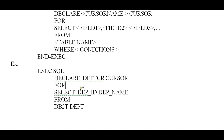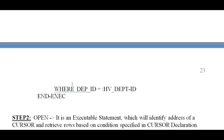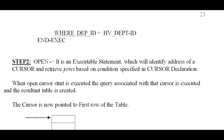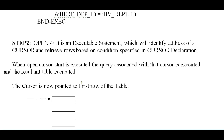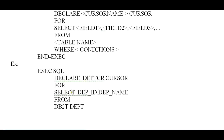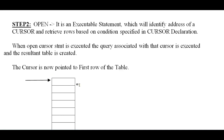Step 2 is to open the cursor. It is an executable statement which identifies the address of a cursor and retrieves rows based on the condition specified in the cursor declaration. When the OPEN CURSOR statement is executed, the query associated with that cursor is executed and a resultant table is created. It then points to the first row of that particular resultant table where you can read the records.